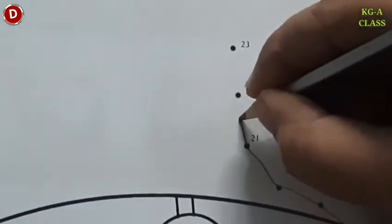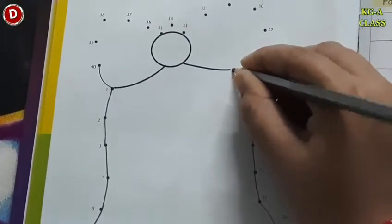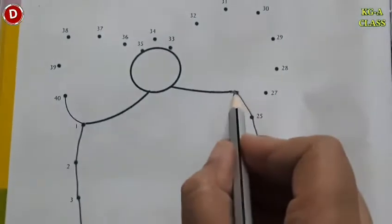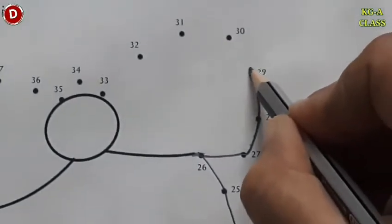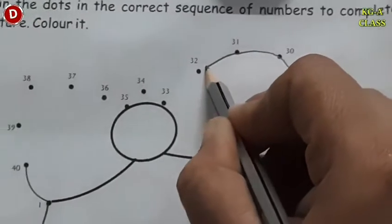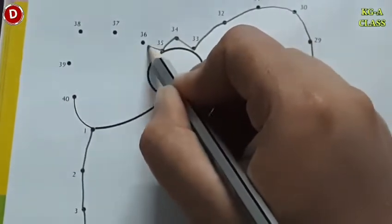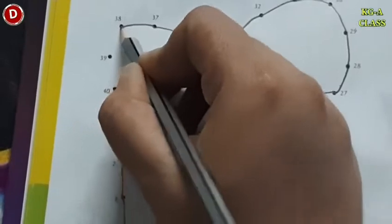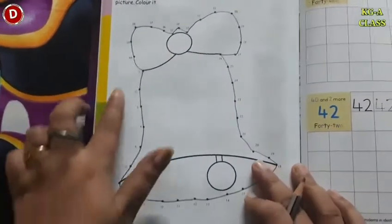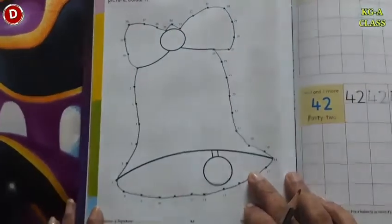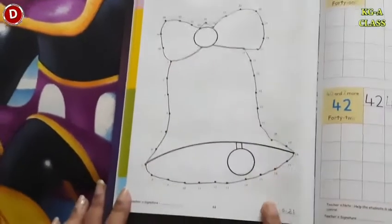21, 22, 23, 24, then 25 and 26. After 26 we move towards 27, 28, 29 and then comes 30, 31, 32, 33, 34, 35, then 36, 37, 38, 39 and here comes 40. In this way children, we have revised number counting 1 to 40 and see what we have made — a beautiful bell with the help of numbers 1 to 40.